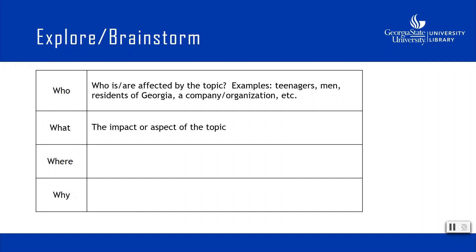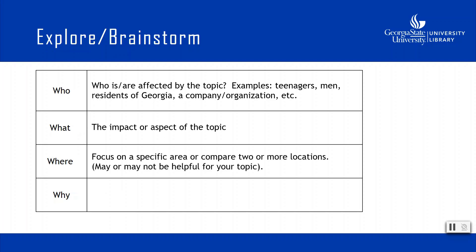The 'what' refers to the impact or aspect of the topic that you could focus on. Does your topic have an impact on any of these groups? Is there a specific aspect about your topic you want to focus on? 'Where' asks whether your topic is unique in a particular part of the world or country — this may or may not be helpful for your topic. And finally, 'why' — what is important about your topic, and what is its significance to you or your reader? These questions help you explore different aspects and frame your research idea. Keeping these in mind, Google your topic and check what Wikipedia or online news sources say.